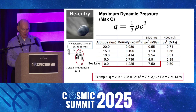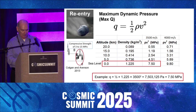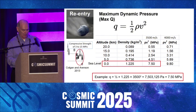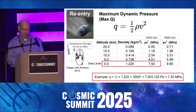During reentry, the maximum dynamic pressure encountered by a projectile — called max Q — is one-half of the air density multiplied by the square of the velocity. Calculating max Q for speeds of 3.5 and 4.0 km per second, we can see that the aerodynamic forces are smaller than the compressive strength of glacier ice, which can be 15 megapascals.